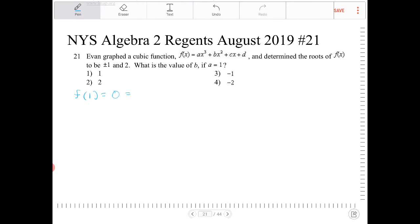And since I know a equals 1, I can then substitute that in there. a is 1, and then the x's are 1 plus b times 1 squared plus c times 1 plus d.